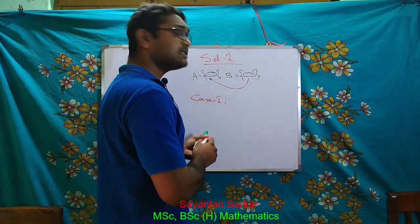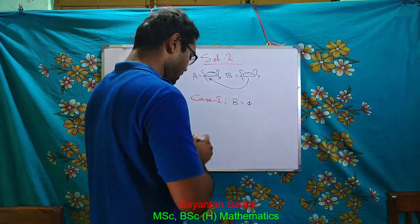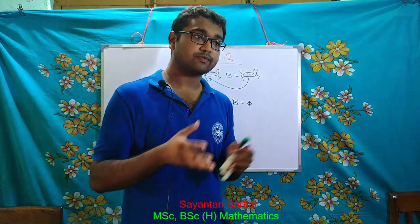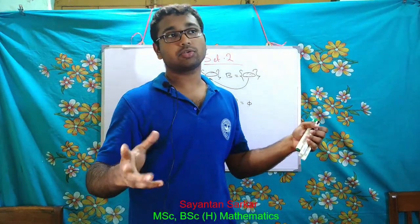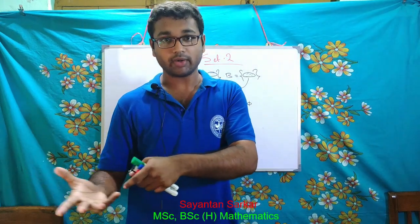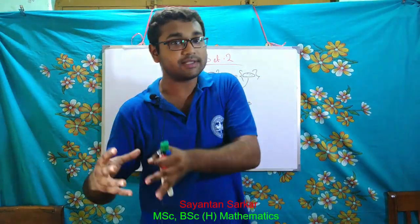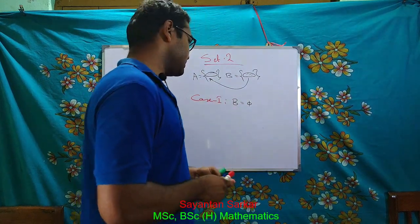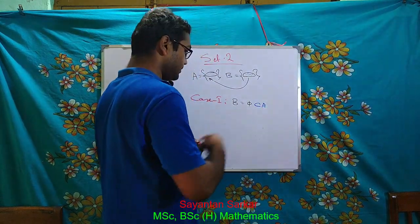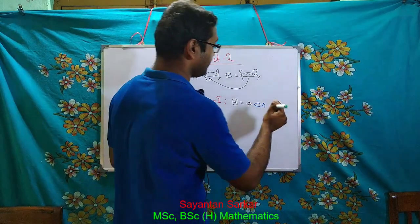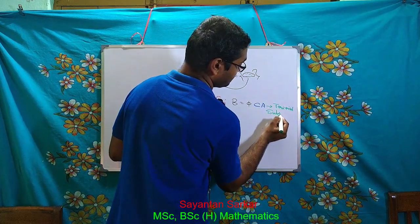Case one: B may actually be the phi set, or null set — meaning B equals phi. The phi set is the subset of any set, because phi set has nothing in it. A set that does not have anything can be thought to be contained in everything. That is why phi is a subset of any set, and here it is A. This set has a very unique and special name — it is known as the trivial subset of A.